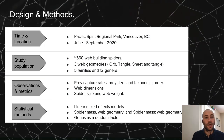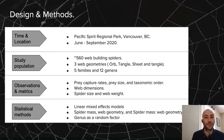We performed an observational study at Pacific Spirit Regional Park in Vancouver, British Columbia, from June through September 2020. We surveyed approximately 560 web-building spiders across five families in 12 genera. Our metrics included prey capture rates, prey size, and taxonomic order, including dimensions of webs, spider size, and web weights. We then ran a set of linear mixed-effects models, with fixed effects including spider mass, web geometry, and the interaction between them, and genus as a random factor to control for phylogeny.